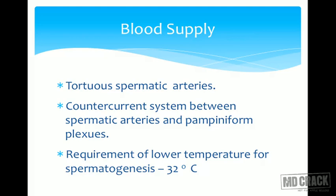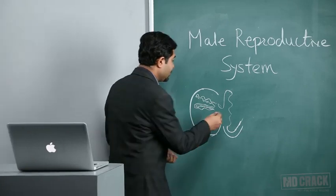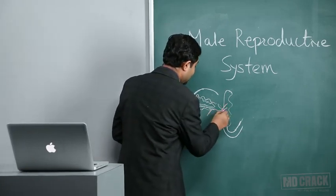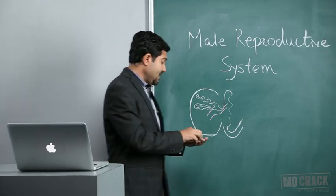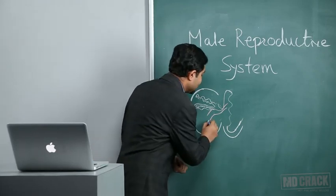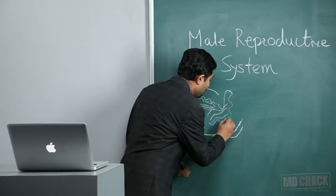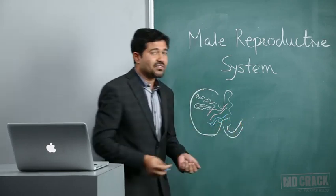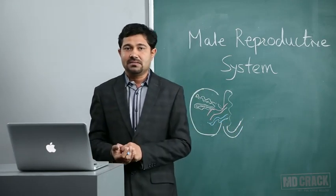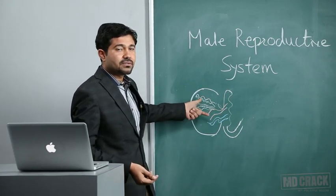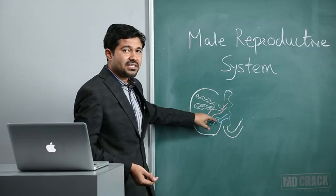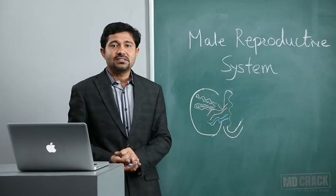Regarding the blood supply of the testis, there are tortuous spermatic arteries that supply blood to the testis. These spermatic arteries have a counter-current mechanism with the pampiniform plexus, which is the venous system of the testis. The venous drainage is to the pampiniform plexus.